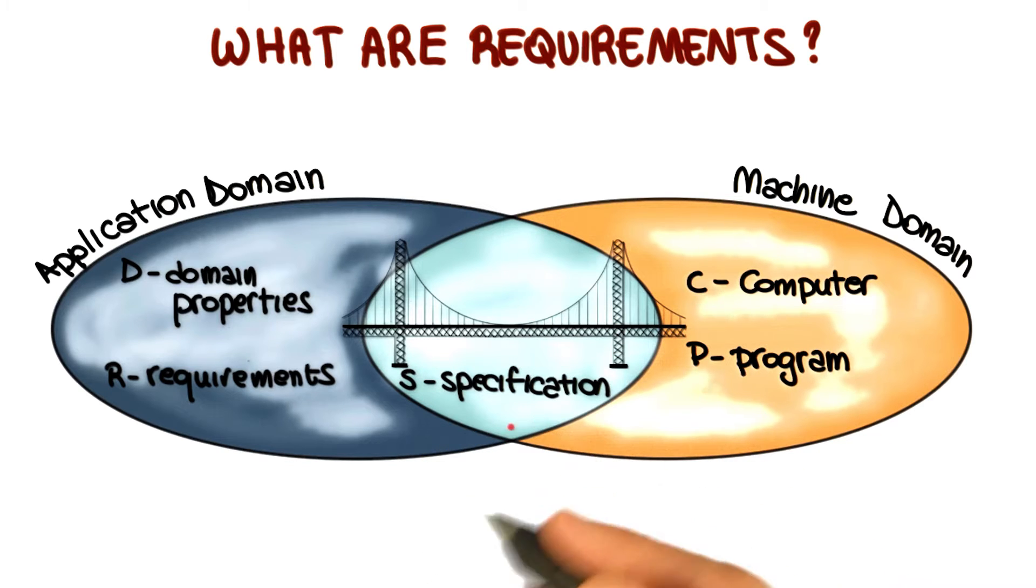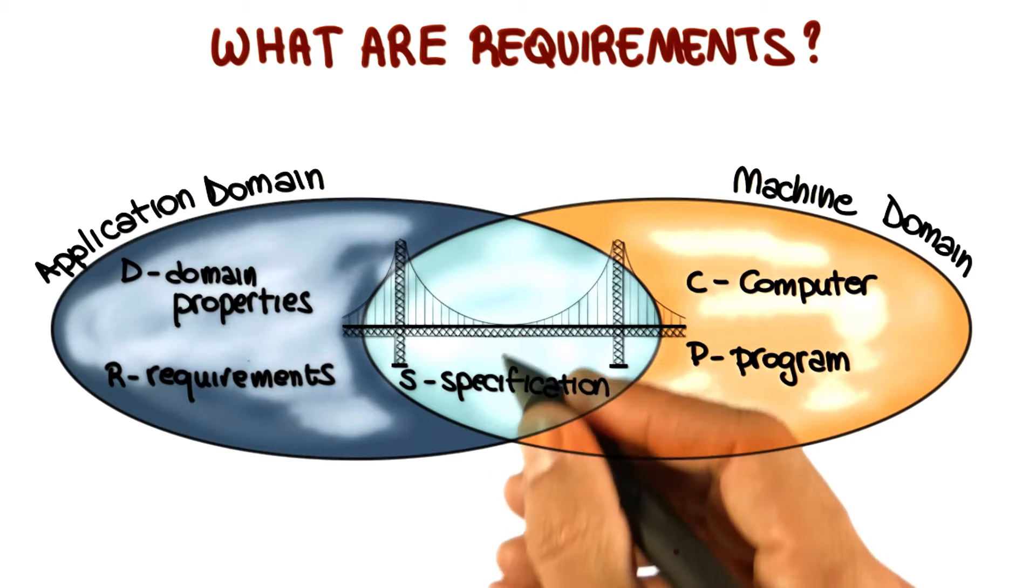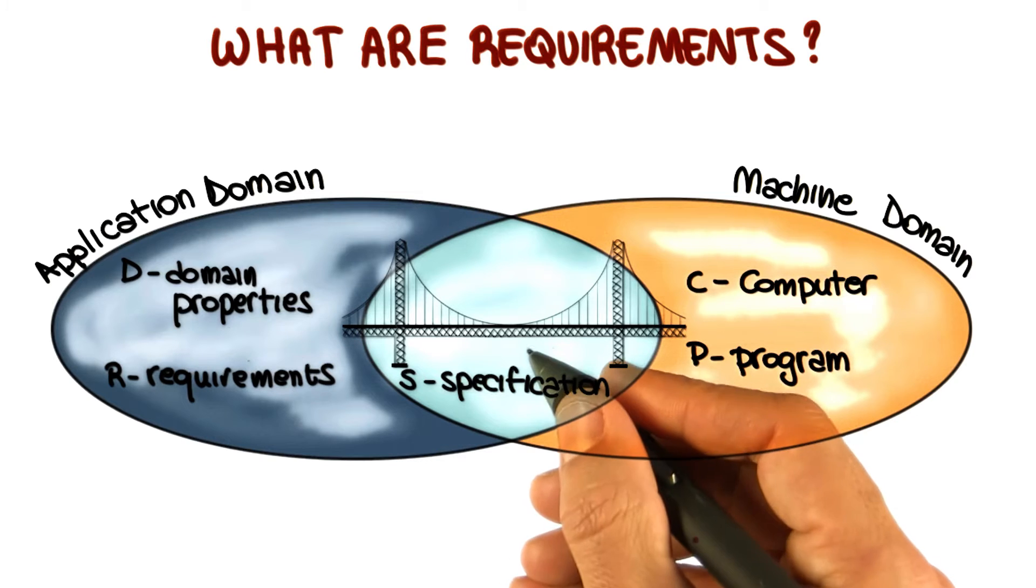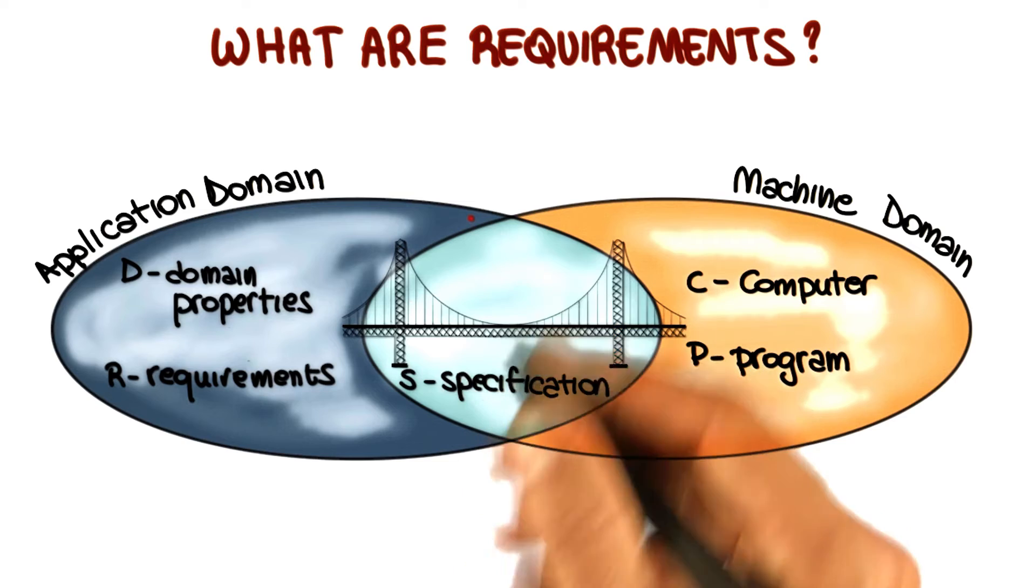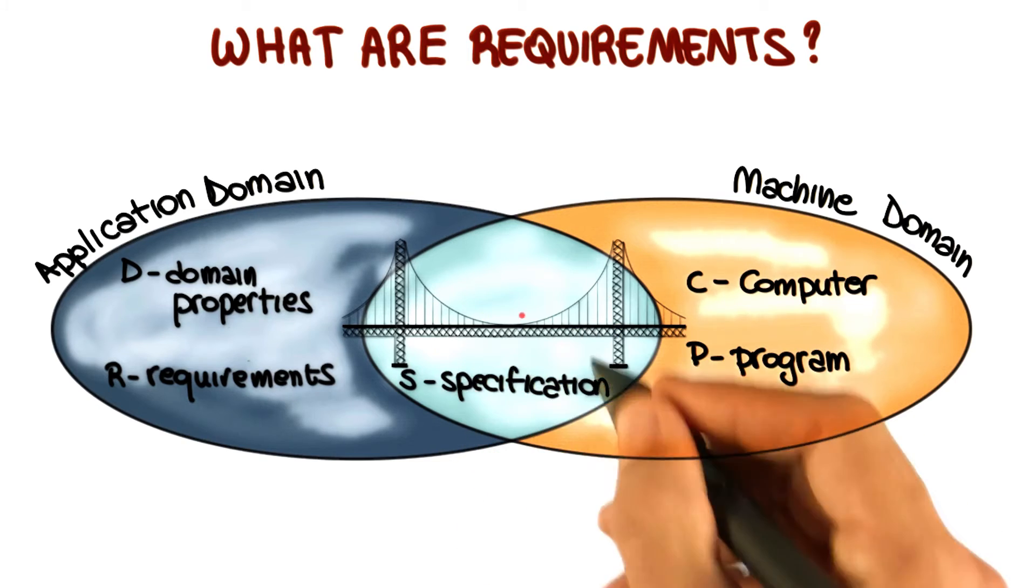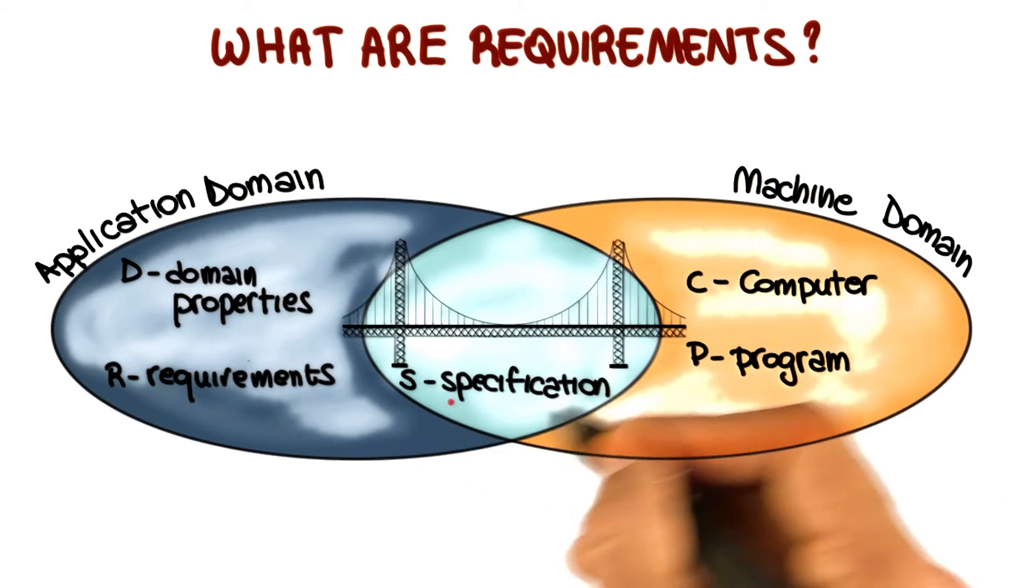And as the graphical depiction shows, the specification is written in terms of shared phenomena, things that are observable in both the machine domain and the application domain. And just to make things a little more concrete, I want to give you a couple of examples of what these shared phenomena are.